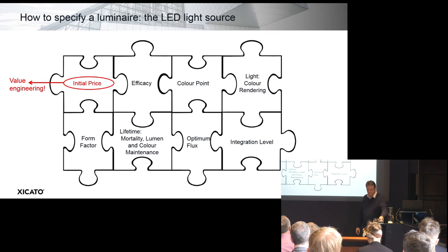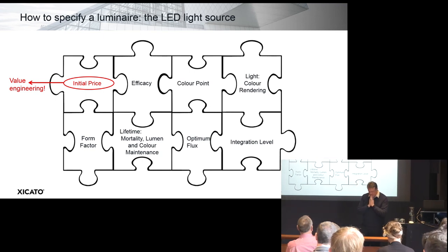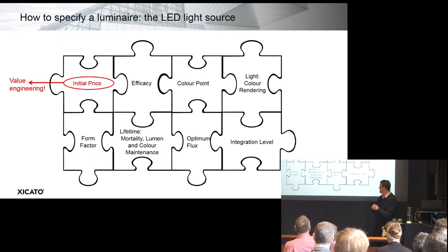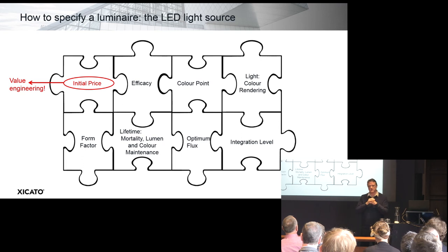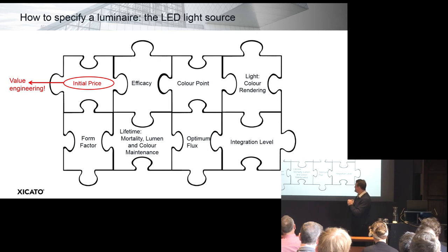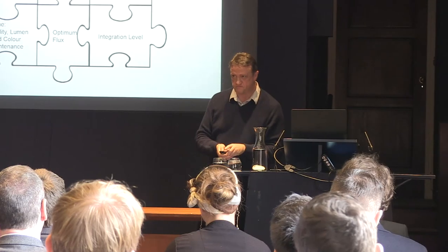For my final slide, I hope I've shown how all these attributes interlink. Initial price is an important attribute but shouldn't be taken in isolation. When I hear the expression 'value engineering', it does seem to hone in invariably on this one attribute. Whether it's CAPEX and OPEX in different budgets — isn't efficacy always important? Isn't it always important to look at the colour rendering and colour point attributes and make certain they're right for the application? Look at the integration level — has it got control gear included within the source? Are you comparing apples with apples? My final message is that initial price is important, but it isn't the be-all and end-all.